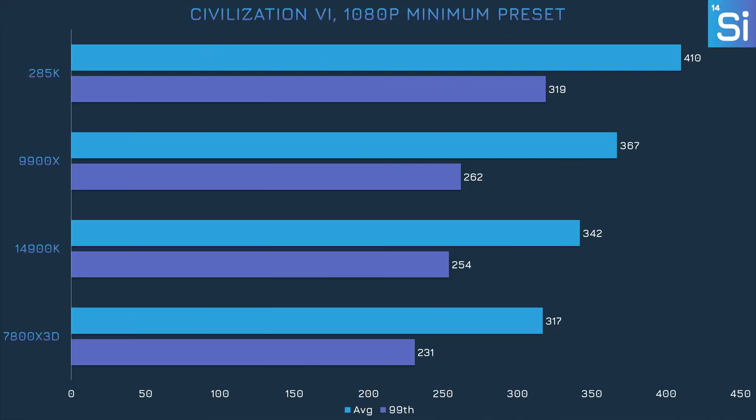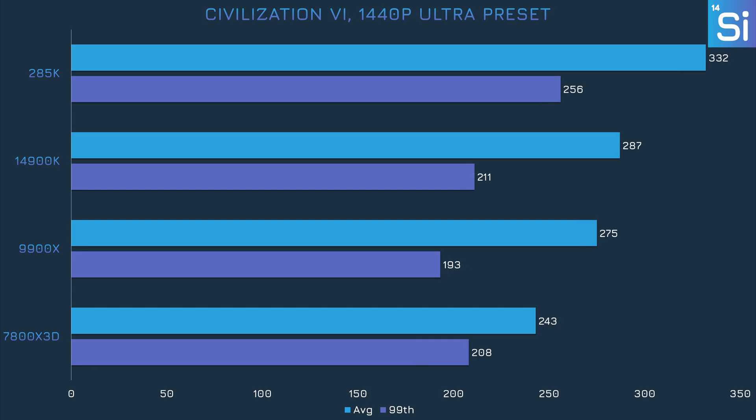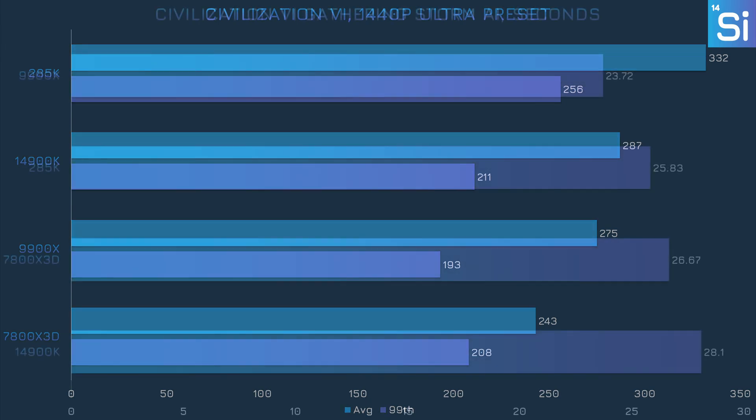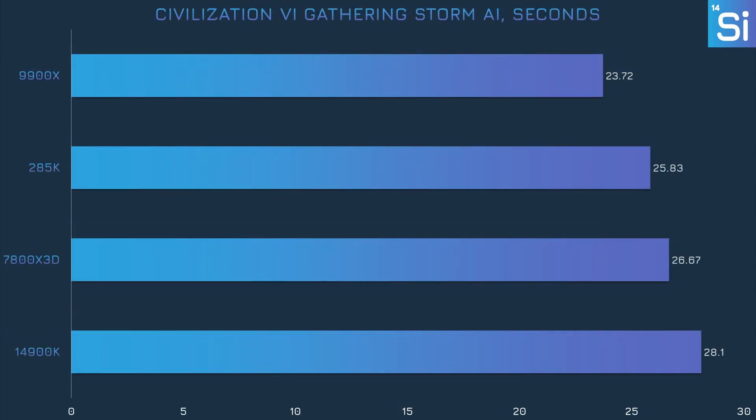In Civilization VI, the 285K finally takes the lead, and a pretty large one at that. The 99th percentile frame rate is also pretty good, which isn't always a given when the average frame rate is really high. At 1440p with more intense settings, the 285K remains in the lead, but the 14900K and 9900X did swap positions. In the turn timer test, the 285K slipped to second place with the 9900X in first, and the 14900K was only slower by just under a second.